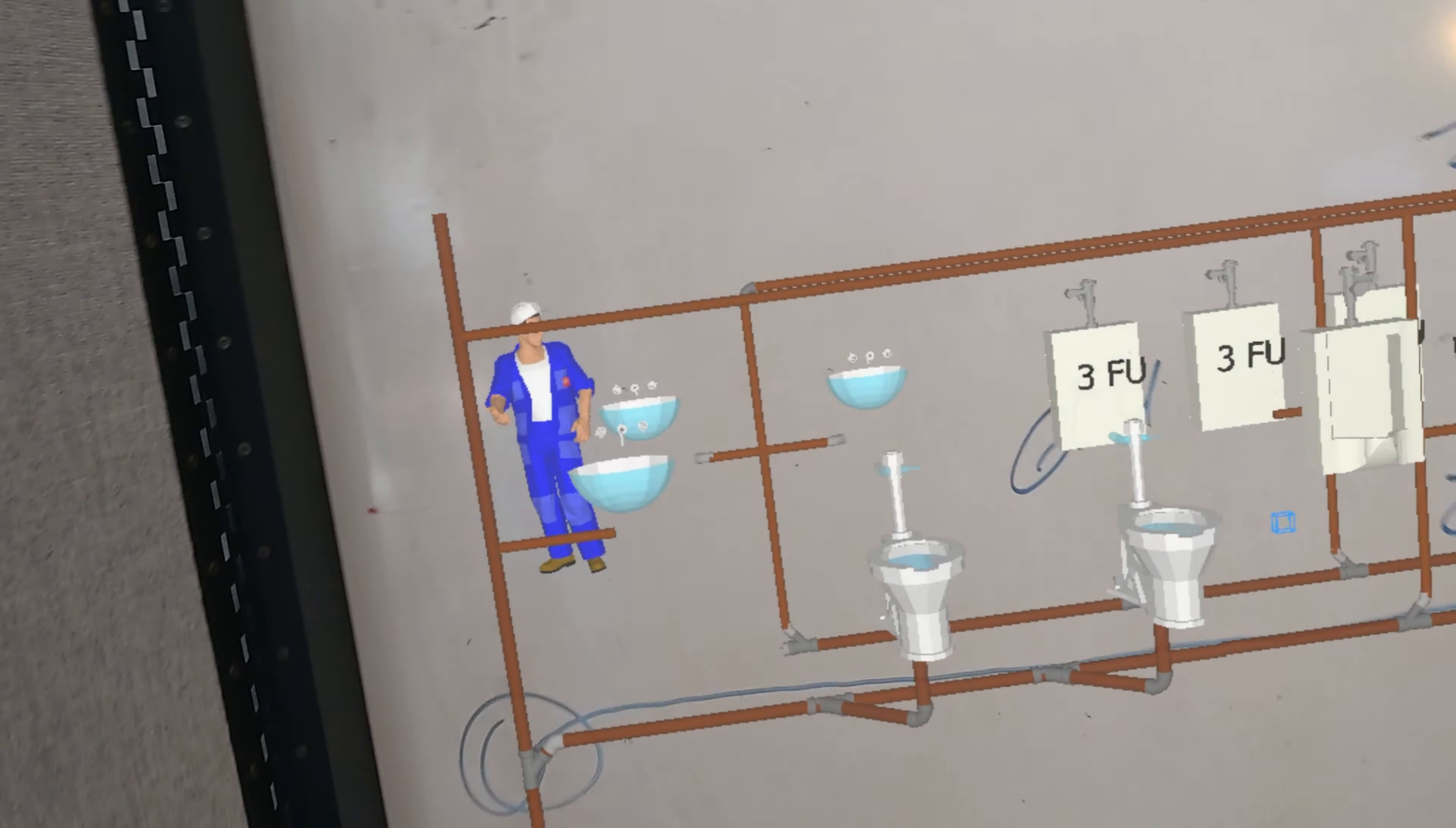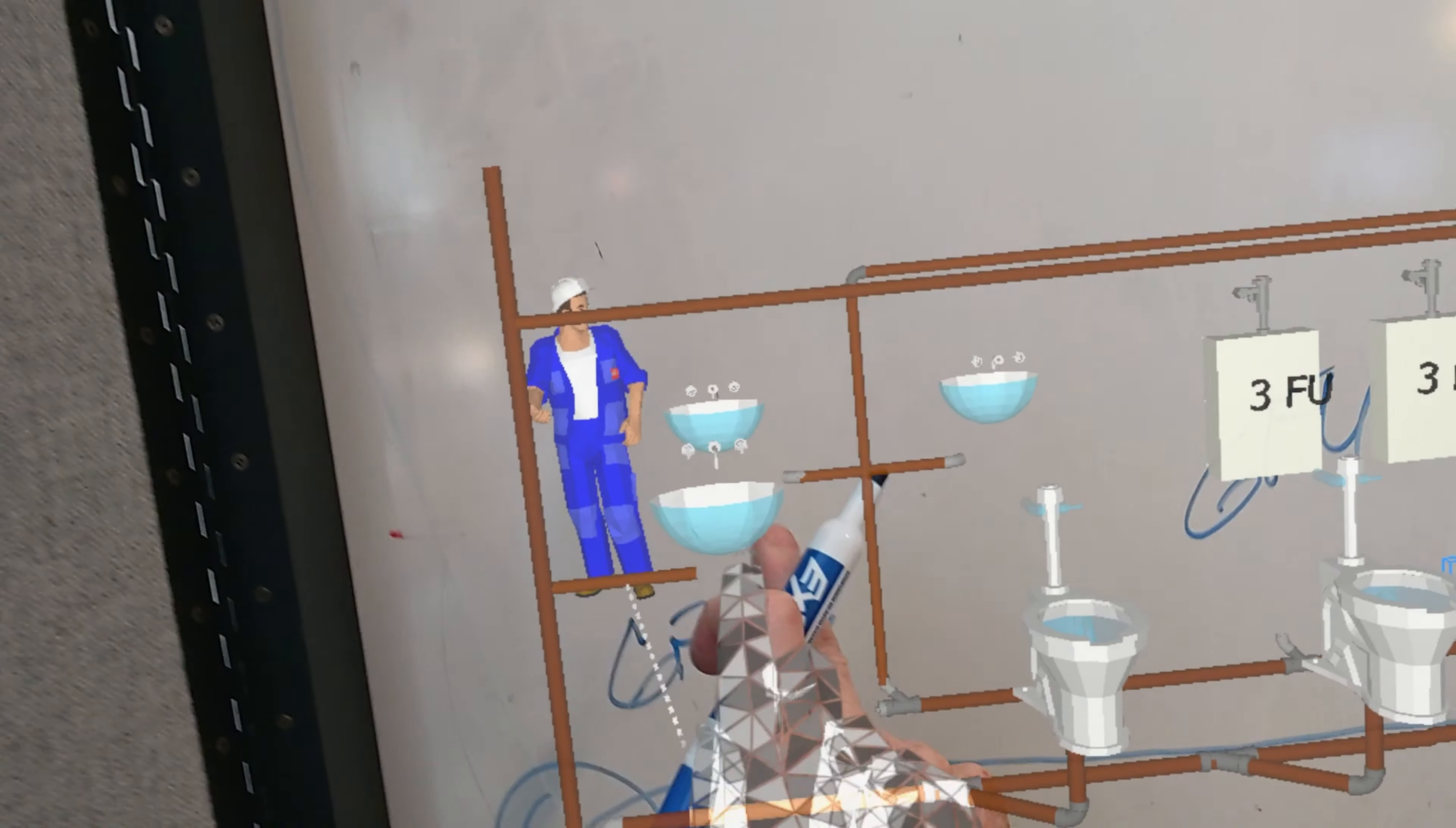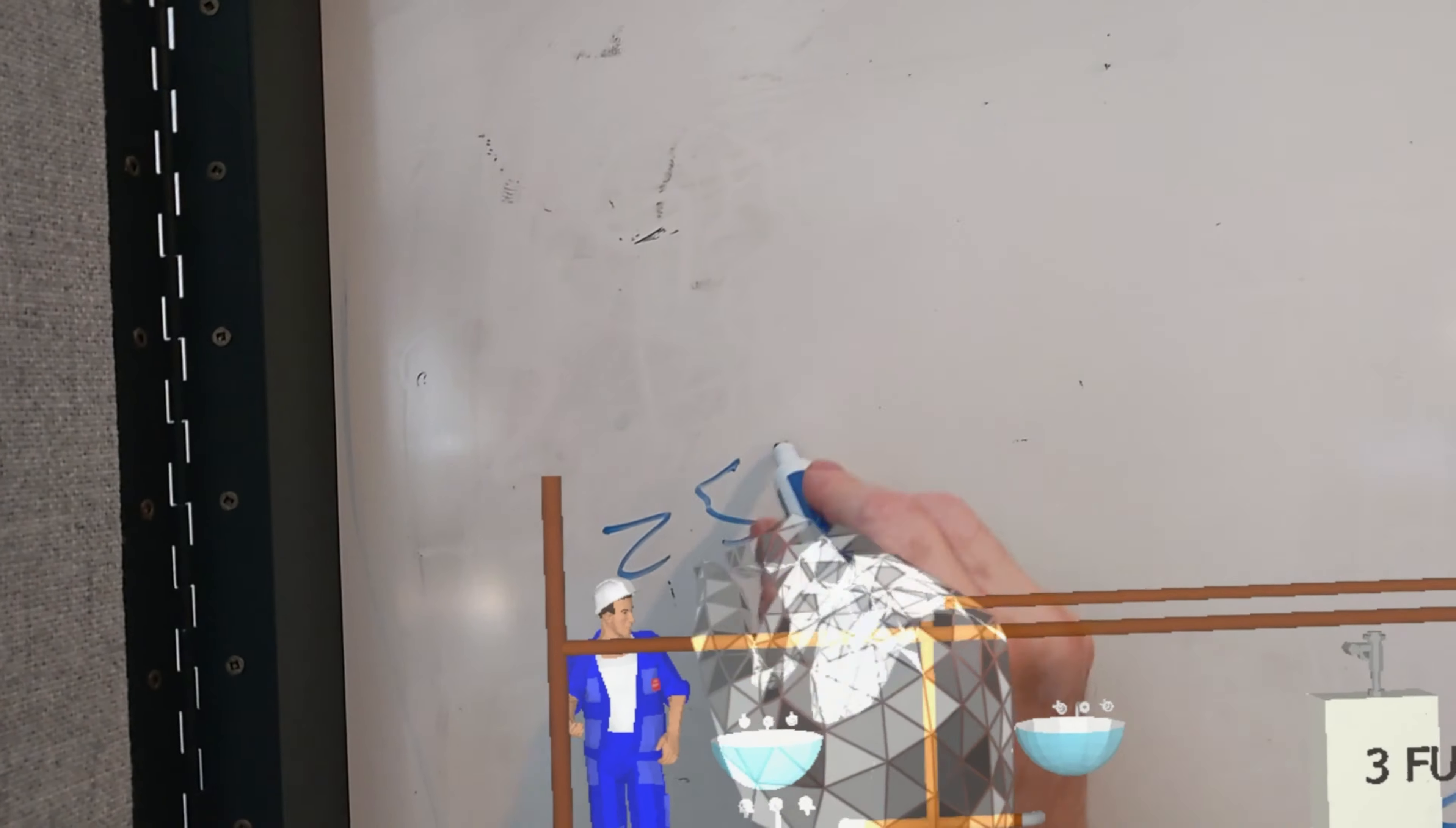And that relief vent has or can have up to six fixture units dumping down it. And we only have one and a half or one depending on how you rate this lav, which works good. And that tells us that in 2531.